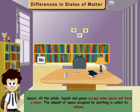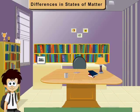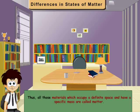Space: All the solids, liquids and gases occupy some space and have a mass. The amount of space occupied by everything is called its volume. Thus, all those materials which occupy a definite space and have a specific mass are called matter.